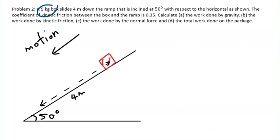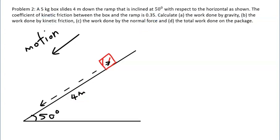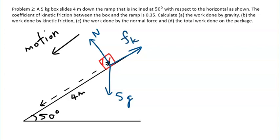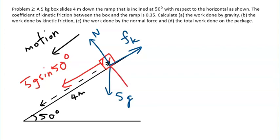In the next problem, a 5 kg box slides down 4 meters along a ramp. The coefficient of kinetic friction is 0.35. Calculate the work done by gravity, kinetic friction, and the normal force, then find the total work done. The free body diagram shows the weight 5g, the normal force N, the kinetic friction F_K acting backward opposite to motion, the weight component parallel to the plane 5g sine 50 degrees, and the component perpendicular to the plane 5g cosine 50 degrees, where 50 degrees is the angle between the inclined plane and the horizontal.